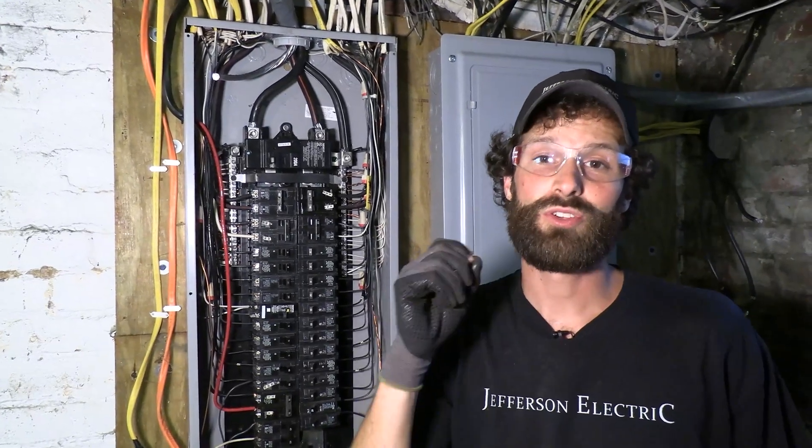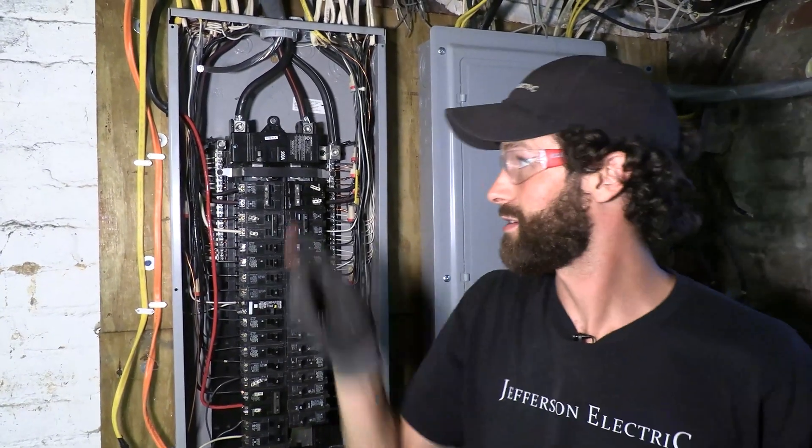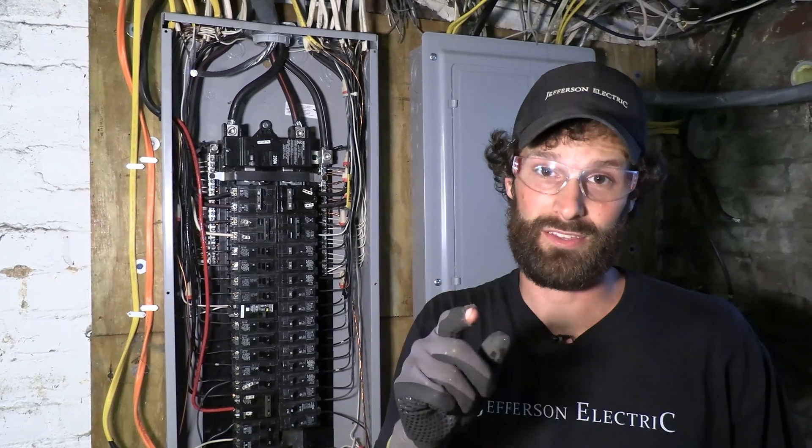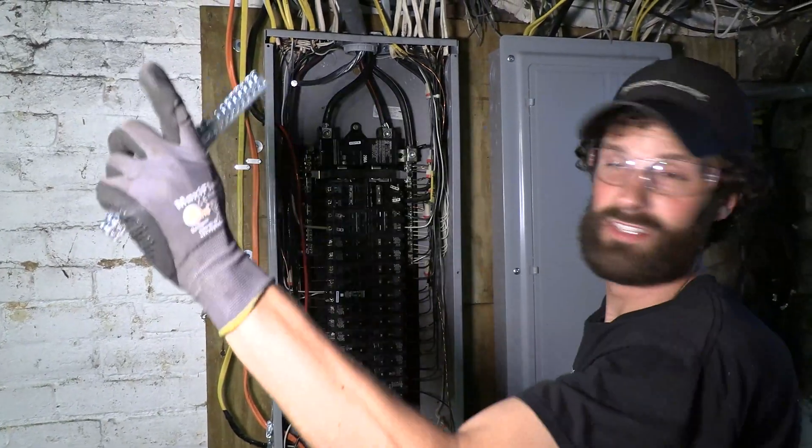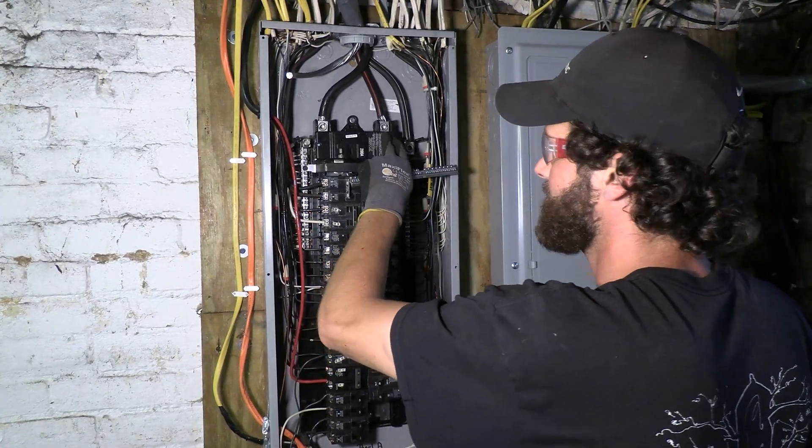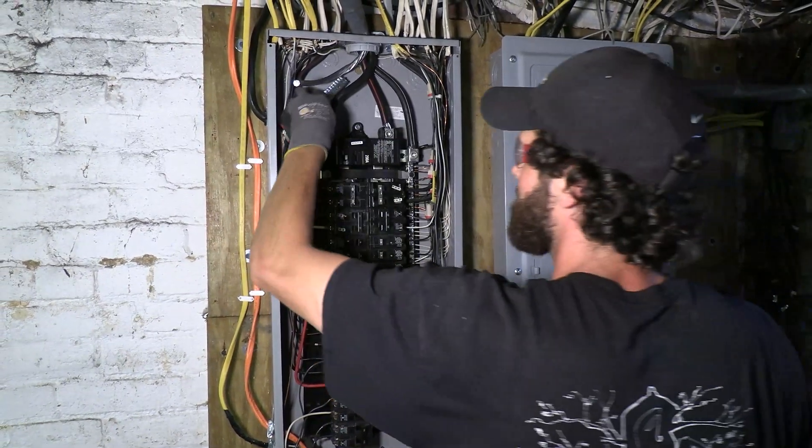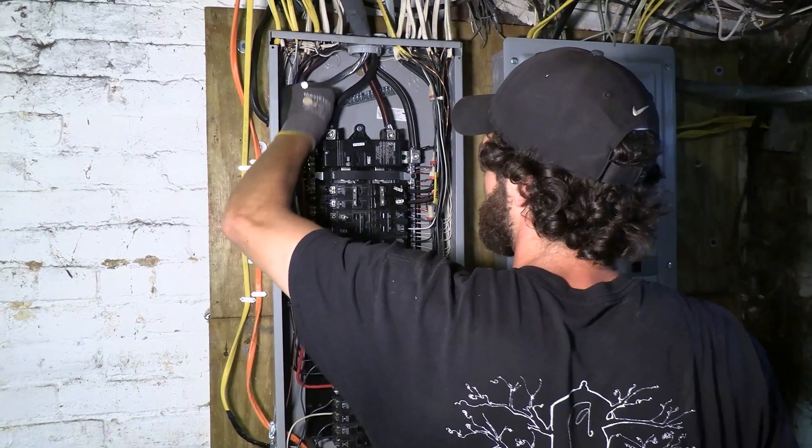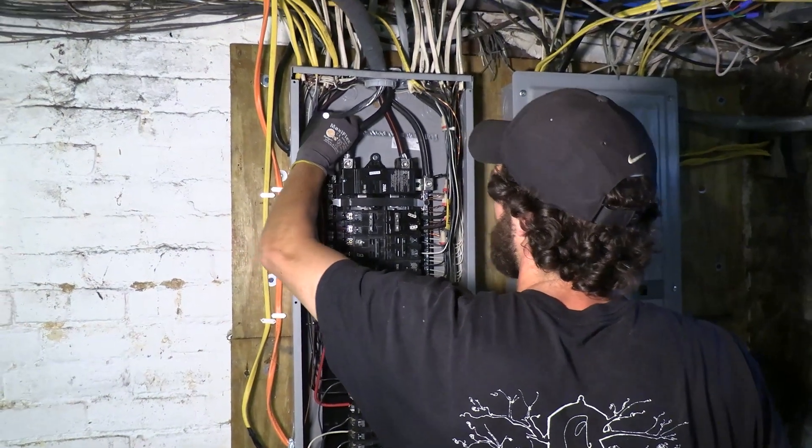Those are 200 amp, 240 volt terminals. There is plenty there to kill you. I've shut off the exterior disconnect. I've de-energized these conductors. I've checked with test equipment to make sure they're de-energized. And now I'm going to mount my ground bar.